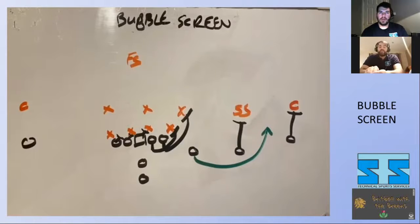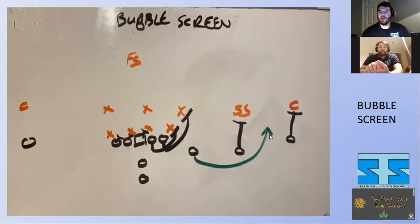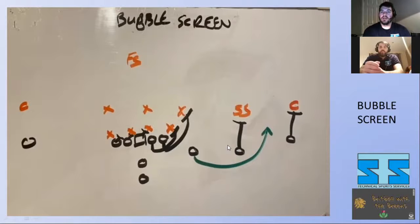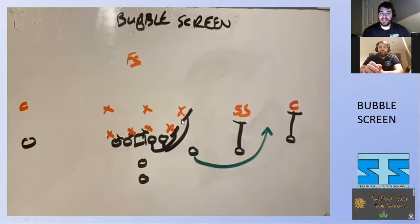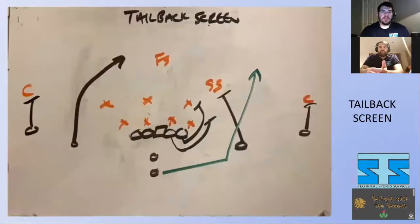This one I wouldn't advise running from two-by-two as much, because if it's man coverage you're going to be outmanned somewhere. For instance, from two-by-two the linebacker bumps out, another bumps in, and the strong safety covers the guy you're throwing to — so there's nobody to block him. You'd be two-on-two with no extra threat, making it really difficult. So moving on to the next one.